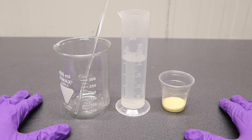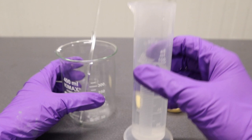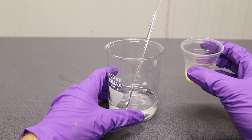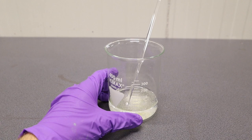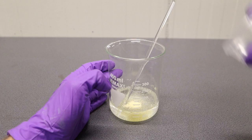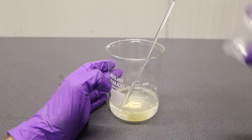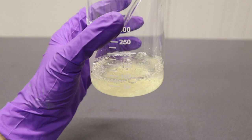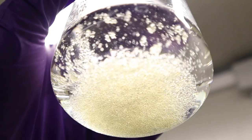Start by preparing the first melt gelatin. Pour 85 milliliters of distilled water into a 500 milliliter beaker and add 3 grams of photographic grade gelatin. Wait for at least 15 minutes so the gelatin becomes fully swollen and easily flattened.